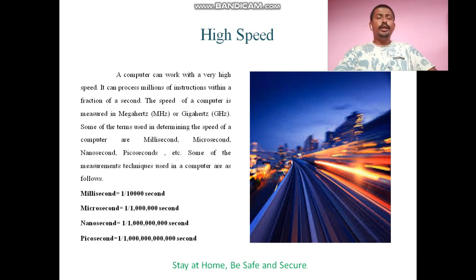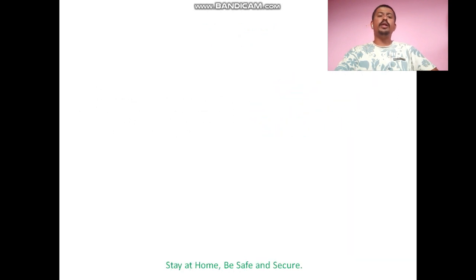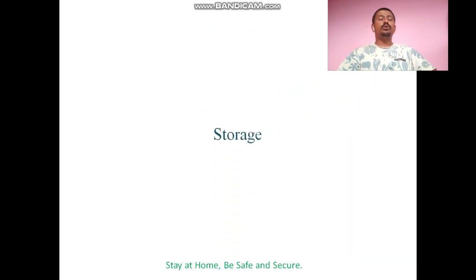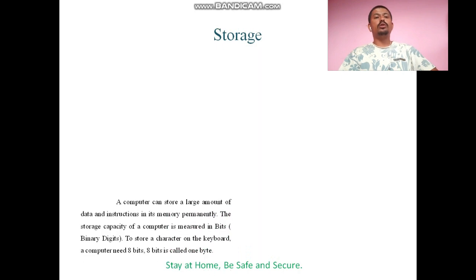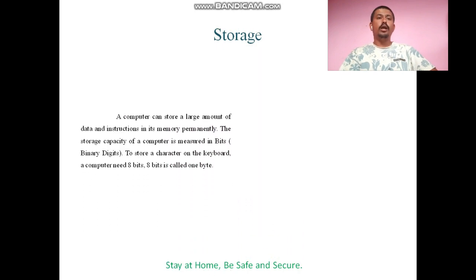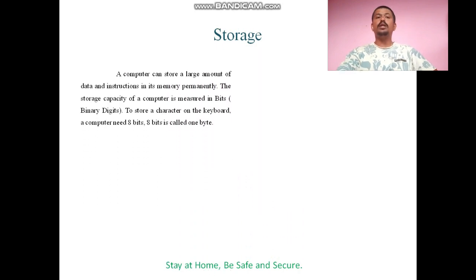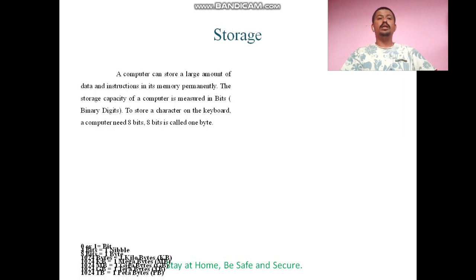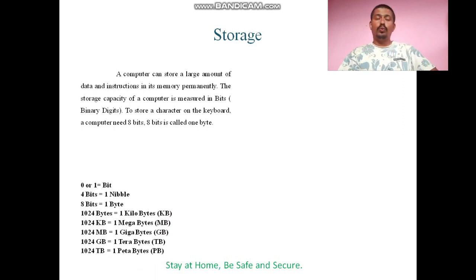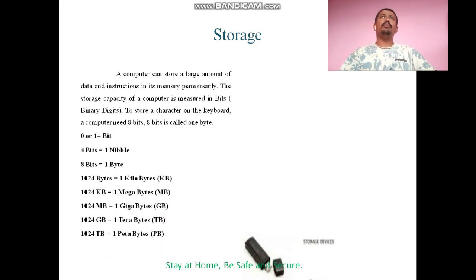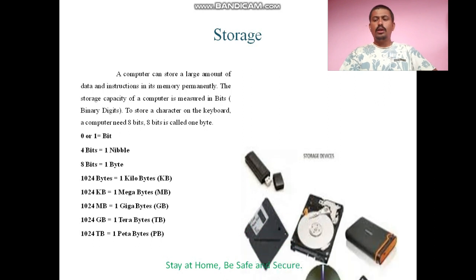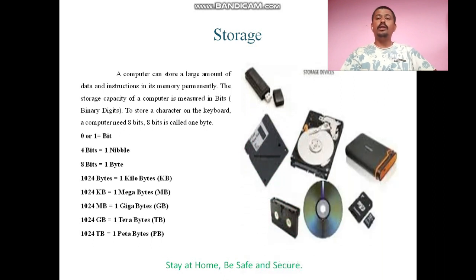The second feature of a computer is storage. A computer can store a large amount of data and instructions in its memory permanently. The storage capacity of a computer is measured in terms of bits. To store a character from the keyboard, a computer needs 8 bits, which is equal to 1 byte. Whenever you type a key on the keyboard, it is stored in the form of binary digits 0 and 1.